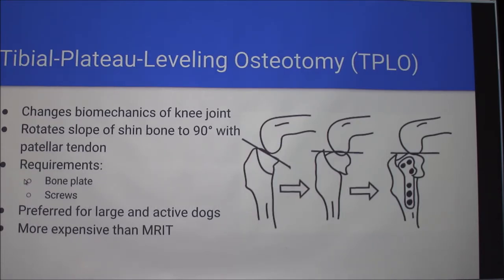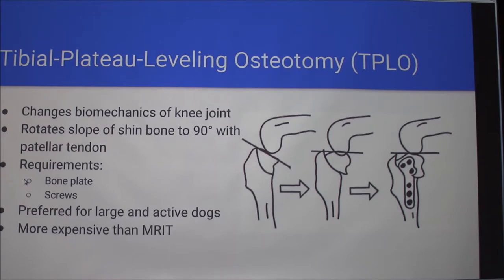The TPLO is the one most recommended by doctors. They'll make a cut there and shift the bone over so that it's at a 90-degree angle with the patellar tendon, then put it into place with a bone plate and screws. That changes the biomechanics of the knee joint so it can function again. Since this one uses more solid pieces, it's more recommended for larger and active dogs, though it is more expensive and requires more specialty from doctors.